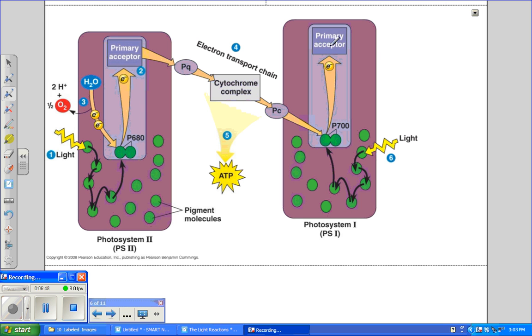Excitement again occurs, an electron goes up and is picked up by the primary electron acceptor of the second electron transport chain. We've got a hole here again, an electron that's missing. If you notice, there's no photolysis or breaking of water to get an electron that's occurring. So where's the electron going to come from?